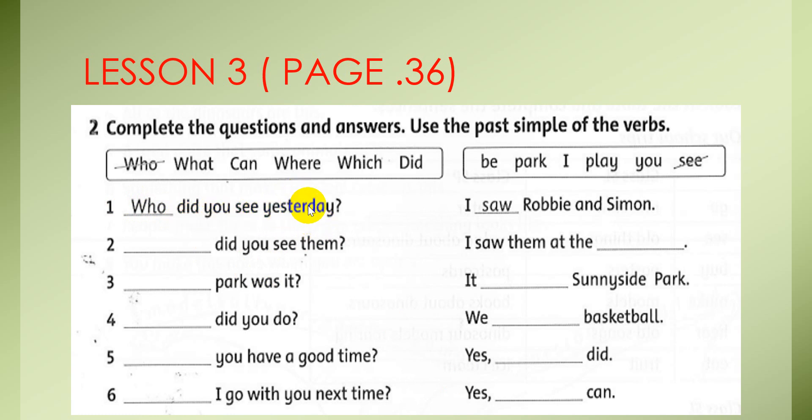Number 2, where did you see them? Answer, I saw them at the park. Number 3, which park was this? It was Sunnyside Park. And how about number 4? What did you do? Answer, we played basketball.